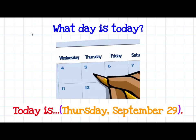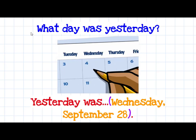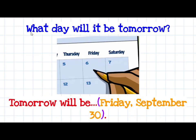What day is today? Today is Thursday, September 29th. What day was yesterday? Yesterday was Wednesday, September 28th. What day will it be tomorrow? Tomorrow will be Friday, September 30th.